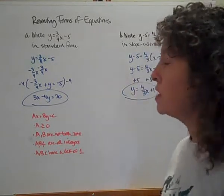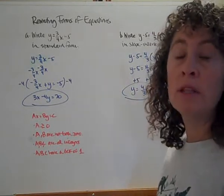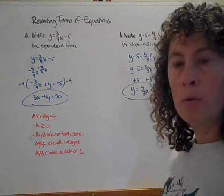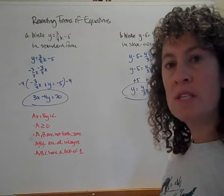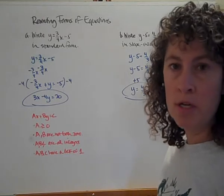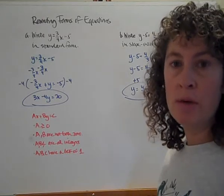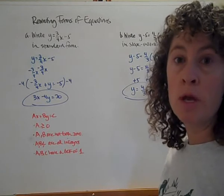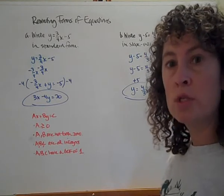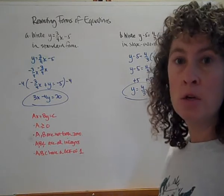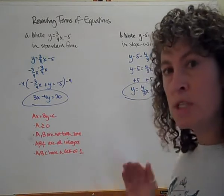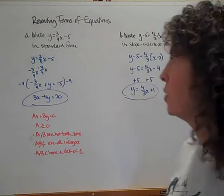Rewriting forms of equations. We've looked at three forms of linear equations, and we're going to talk today about manipulating from one to the other. We've talked about standard form, slope-intercept form where I know the slope and y-intercept, and point-slope form where I know a point on the line and the line's slope. Let's move back and forth between those forms.